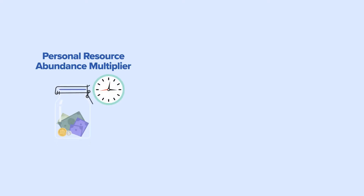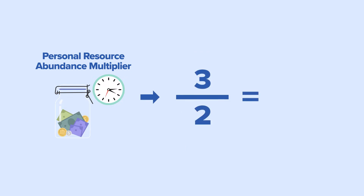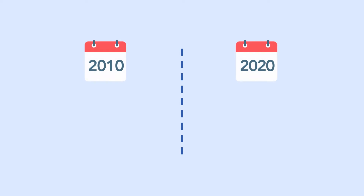The Personal Resource Abundance Multiplier is the ratio of the start-year time price over the end-year time price. With respect to our banana example, the multiplier equals 3 divided by 2, or 1.5. In other words, the working time required to earn enough money to buy one banana in the start year of the analysis will purchase 1.5 bananas in the end year of the analysis.